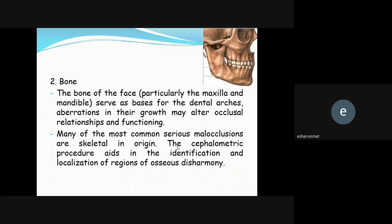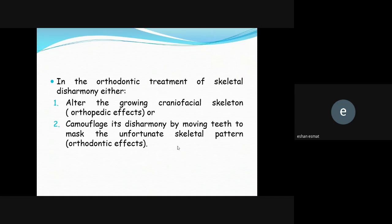Bone — the bones of the face, whether maxilla or mandible, are also affected in malocclusion. Many of the most common serious malocclusions are skeletal in origin. Cephalometric procedures help identify and locate the regions of osseous disharmony, telling us whether the problem is from the maxilla, mandible, or both, and how to treat the patient. In orthodontic treatment of skeletal disharmony, we can use orthopedic treatment during the growing period, or camouflage treatment — which involves only dental/tooth movement effects — as an alternative.